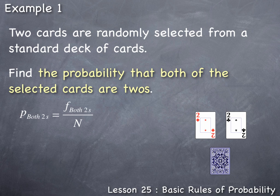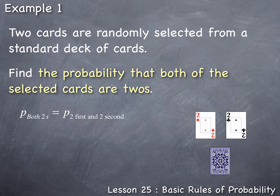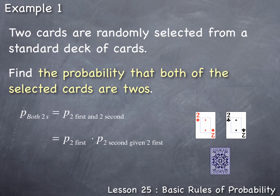Instead, we can use one of the basic rules of probability based on keywords — the 'not,' 'or,' 'and,' or 'given' type of problems. The probability that both selected cards are twos can be found using the AND rule: take the probability of the first event — selecting a two first — and multiply it by the probability of the second event — getting a two the second time, given the first card was a two.